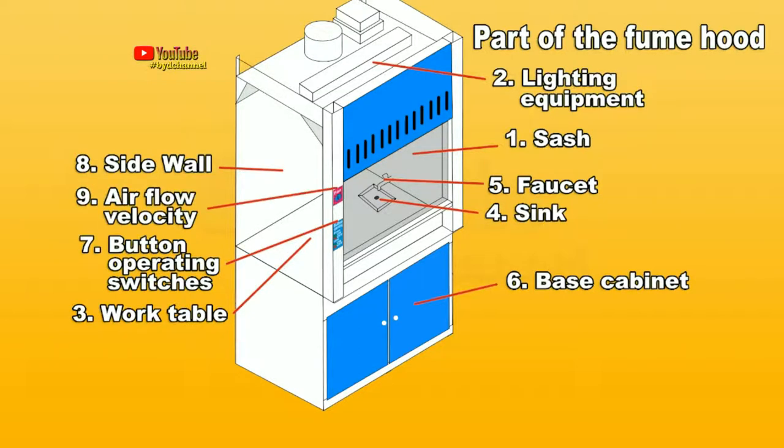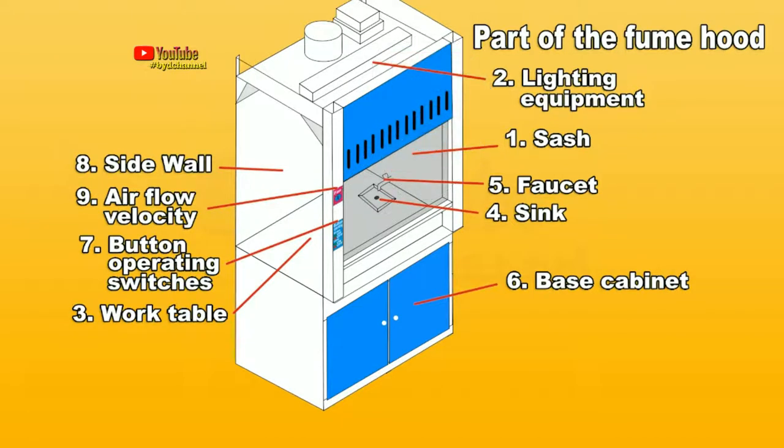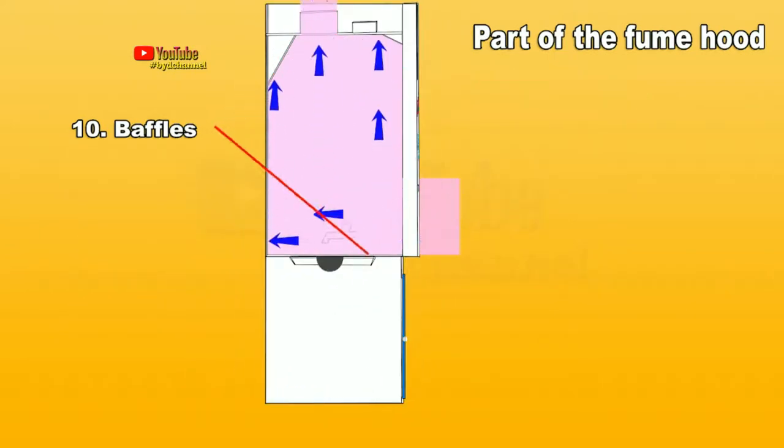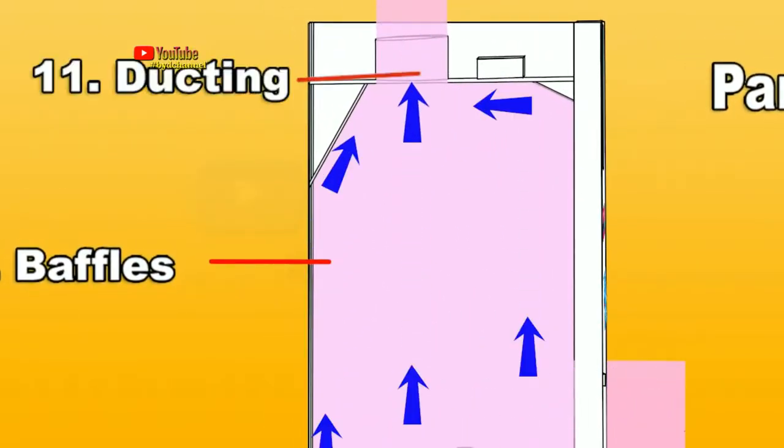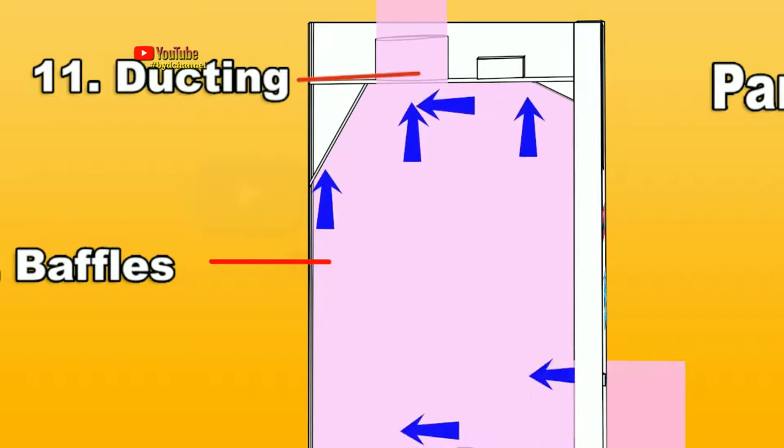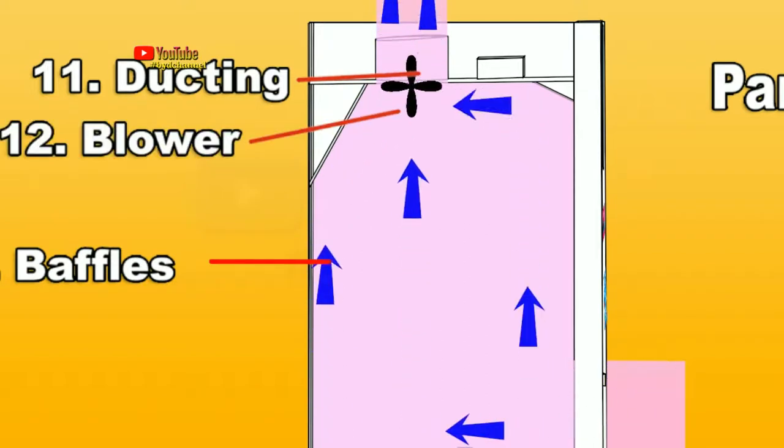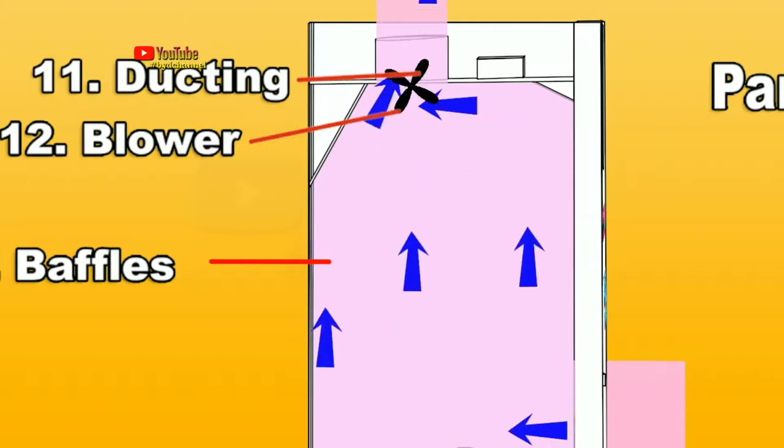Nine: Air flow velocity indicator to measure air flow velocity. Ten: Baffle - reflective flow where chemicals can be sucked effectively by the blower. Eleven: Conducting to exhaust outlet. Twelve: Blower - a tool that has the function of sucking air and throwing it out.